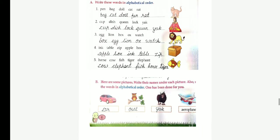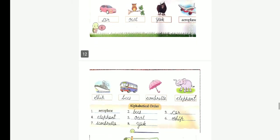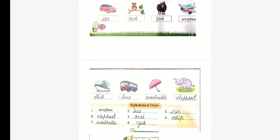Next one. Here are some pictures. Write their names under each picture. Also, write the words in alphabetical order. First picture, car. Next one, owl. Next, yak. Look at the next picture. Aeroplane. Next picture, ship, bus, umbrella, elephant.